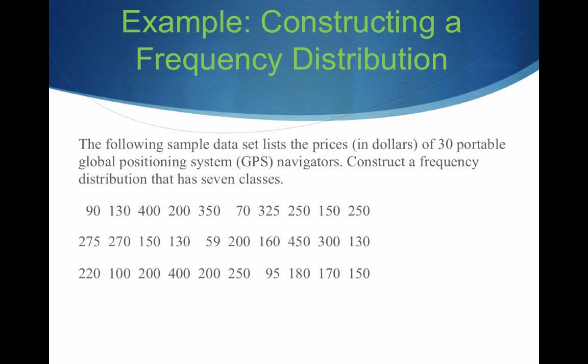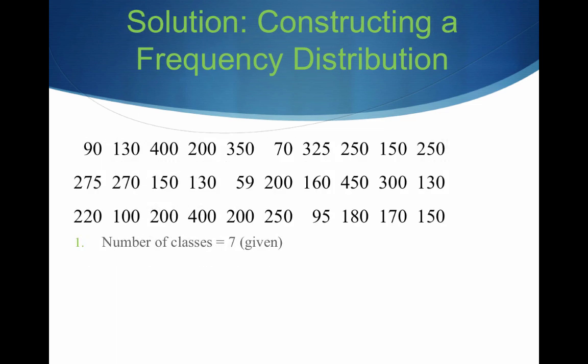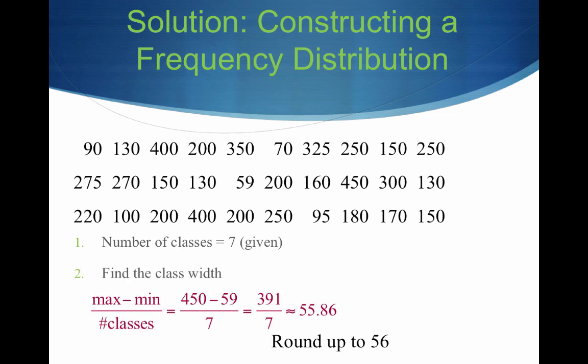Here we have a sample data set listing the prices of 30 portable GPS navigators. We want to construct a frequency distribution with seven classes. Step 1: the number of classes is 7. For step 2, the maximum value is 450 and the minimum is 59, giving a range of 391. Dividing 391 by 7 gives approximately 55.86 — since we get a decimal, we round up to 56, so the class width is 56.